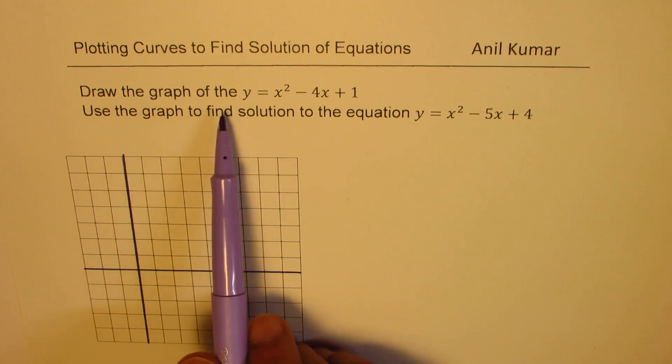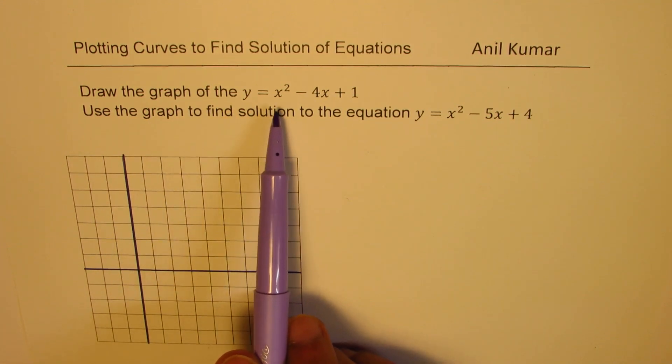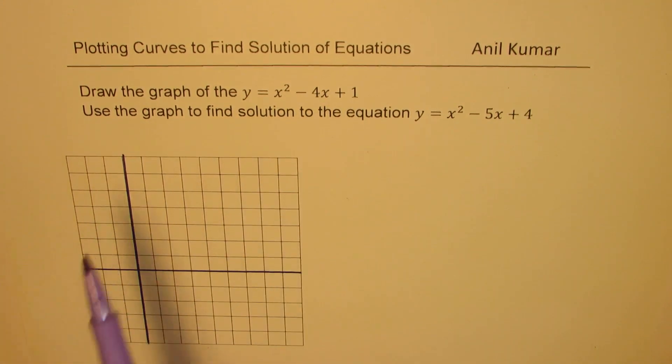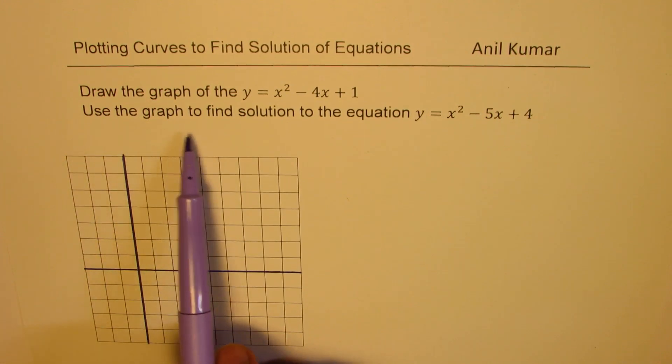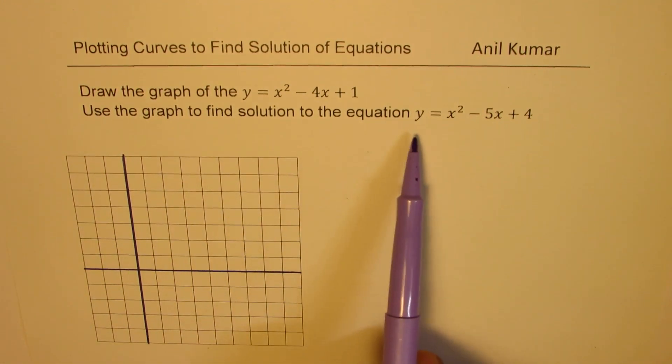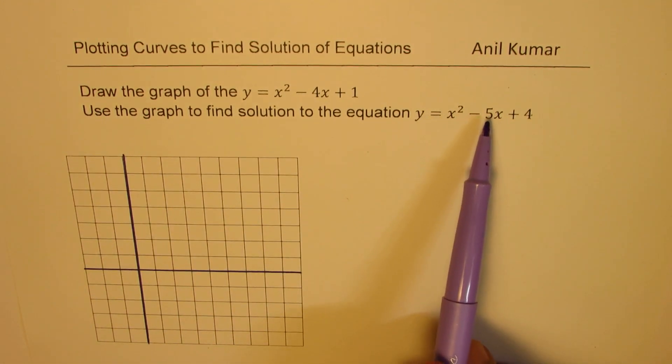We'll first draw the graph of the function y equals x squared minus 4x plus 1, and then use the graph to find the solution of the equation y equals x squared minus 5x plus 4. This is a very important test question and I hope its solution will help many of you.